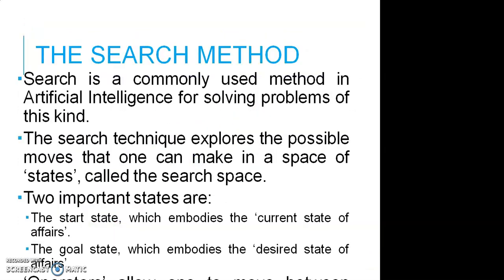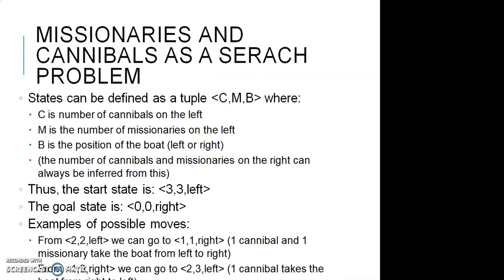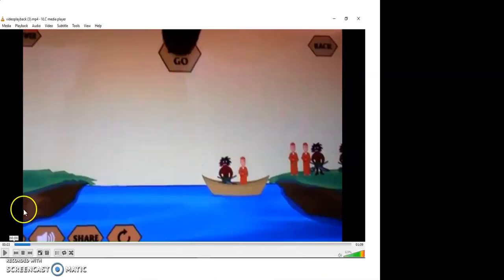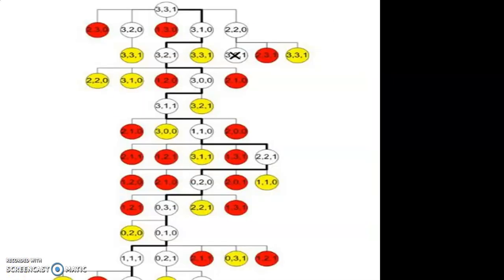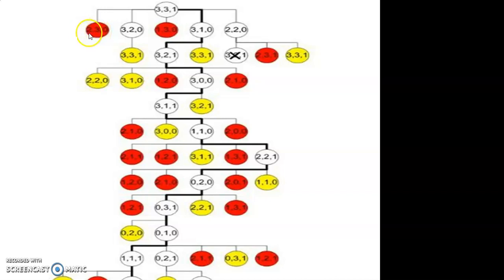Now what is the search method? Let us look at the graph. Since we have five choices — send one missionary, one cannibal, two missionaries, two cannibals, or one missionary and one cannibal — this graph has been generated. In the first choice, if we send one missionary, we will be left with two missionaries and three cannibals on the left side, which is a dangerous situation and is therefore marked in red.